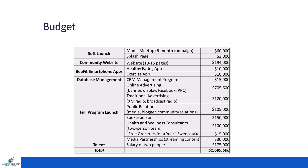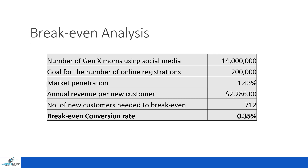Here's an example of a budget a company did. Notice they're spending $1.689 million. They said: if there are 14 million moms, what do we need for break-even? Based on their economics — with an average revenue per new customer of $2,200 — they need to generate at least $712 in order to recover their marketing costs. This allows us to say: this is the must-have outcome coming out of the marketing program to at least recover our costs.